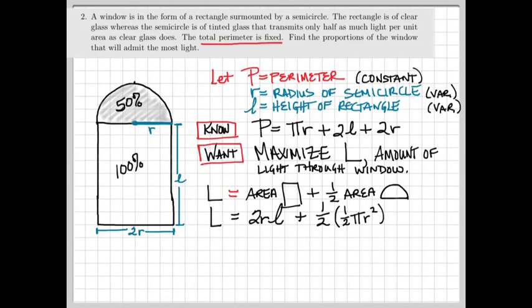In terms of R and L, this tells us L is going to be 2R times L plus half the area of the circle is 1/2 πR². So we will take half of that half to give us a total of 1/4 πR².